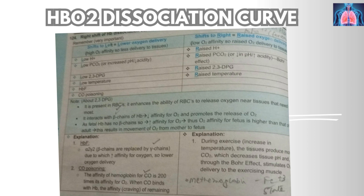Fetal hemoglobin has no beta chains, so its affinity for oxygen is increased compared to adult hemoglobin — it is made up of two alpha and two gamma chains. This results in movement of oxygen from mother to fetus. Regarding carbon monoxide: the affinity of hemoglobin for CO is 200 times its affinity for oxygen. When CO binds to hemoglobin, the affinity of the remaining sites for oxygen increases further, causing an extreme shift of the curve towards the left.